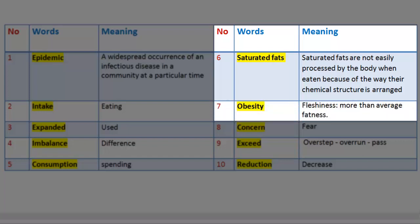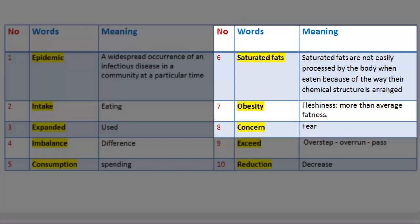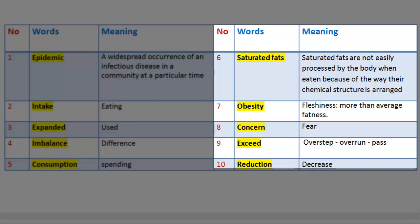Number 7. Word: Obesity. Meaning: Fleshiness — more than average fatness. Number 8. Word: Concern. Meaning: Fear. Number 9. Word: Exceed. Meaning: Overstep, overrun, pass. Number 10. Word: Reduction. Meaning: Decrease.